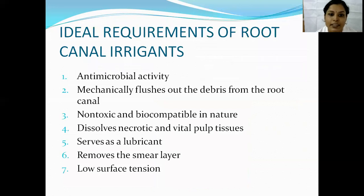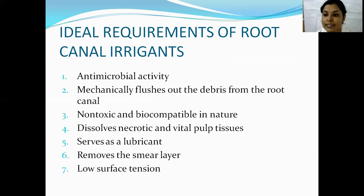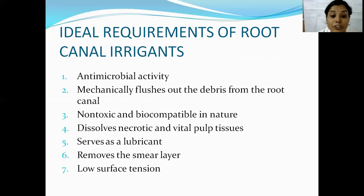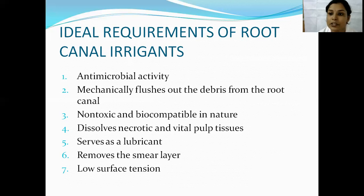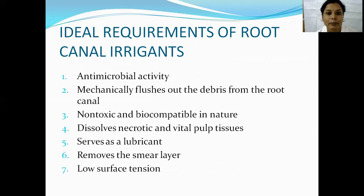The ideal requirements of irrigants are: first, it should be antimicrobial. Second, it should have the mechanical ability to flush debris out of the root canal. It should be non-toxic as well as biocompatible to the periradicular tissues. It should have the ability to dissolve the remaining necrotic tissue as well as vital pulp tissue, and it should serve as a lubricant and facilitate instrumentation. It should remove the smear layer — an inorganic layer that mainly covers the dentinal tubules and prevents the irrigant from reaching bacteria within the dentinal tubules. Finally, it should have low surface tension; the lower the surface tension, the better the contact angle between the irrigant and the bacterial and dentinal surfaces, and the better will be its action.